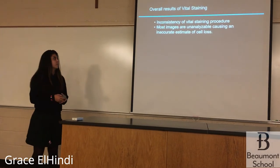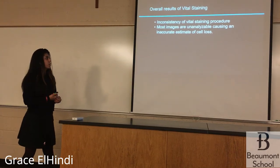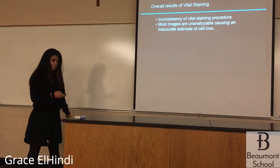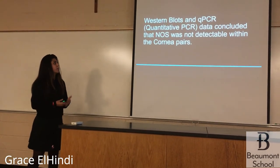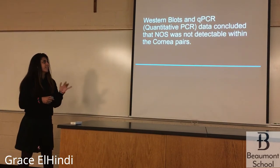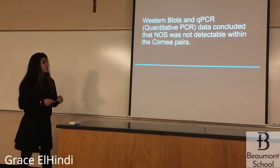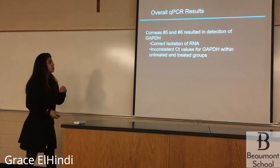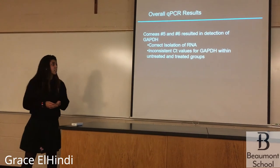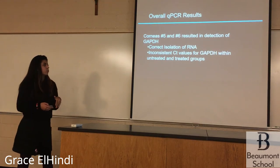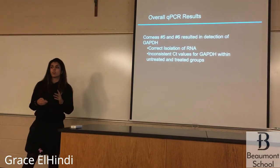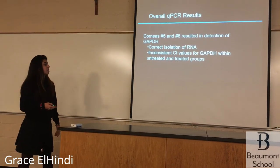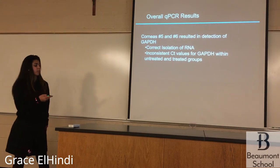The same thing was done for pair 6: the left cornea was treated and the right was untreated, each showing percentages of dead and live cells. These images also had issues with accuracy due to folds and lighting focus — sometimes the lighting was too dark or too bright, making the cell count inaccurate. The overall results of the vital staining showed inconsistency, as most images were unanalyzable, causing an inaccurate estimate of cell loss. Western blot and QPCR data concluded that NOS was not detectable within the cornea pairs. However, QPCR results for pairs 5 and 6 did detect GAP-DH, meaning the Western was run correctly and RNA was isolated correctly, though CT values for GAP-DH were inconsistent within untreated and treated groups.